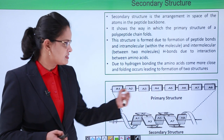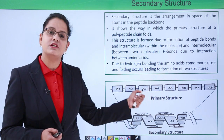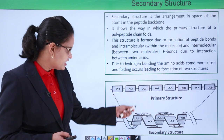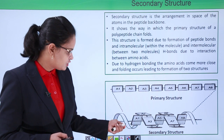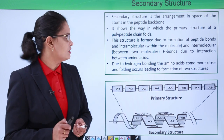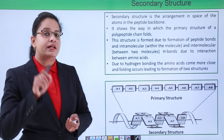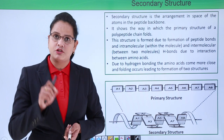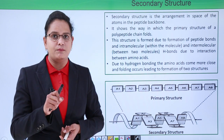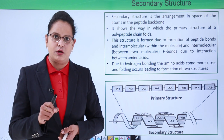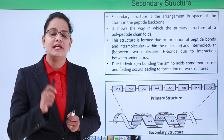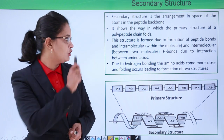This primary structure gets folded to form the secondary structure. The secondary structure, apart from the peptide bond, also has hydrogen bonds. The hydrogen bond can be intramolecular, which means within the molecule, and intermolecular, which means between two molecules.